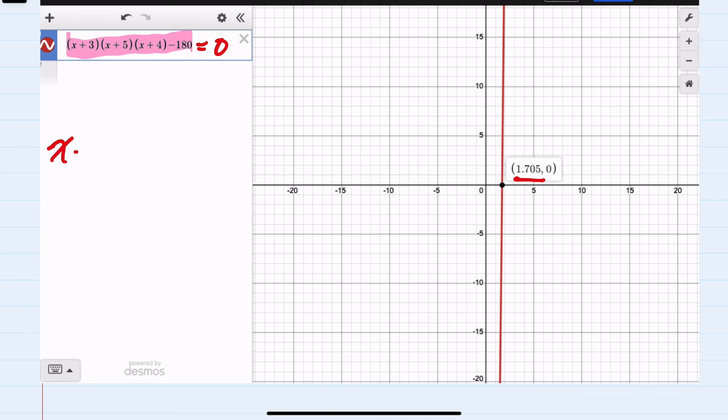So my X value would be 1.71 when rounded to the hundredths place.